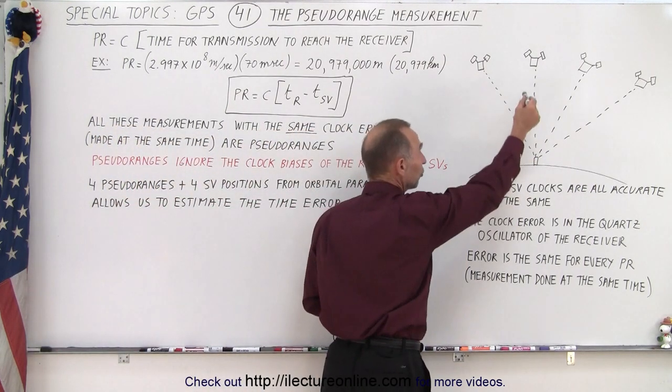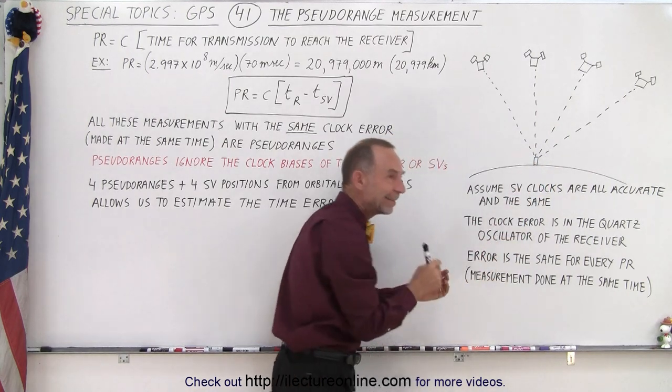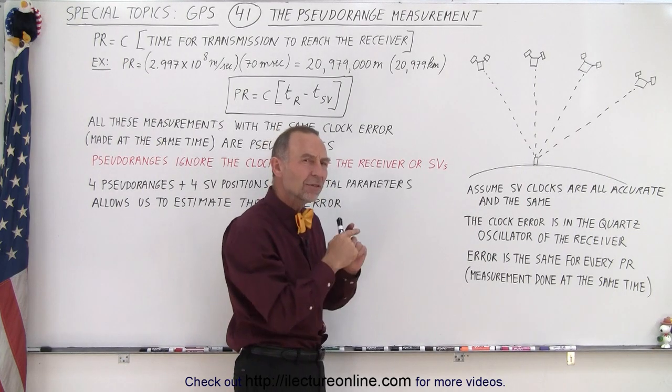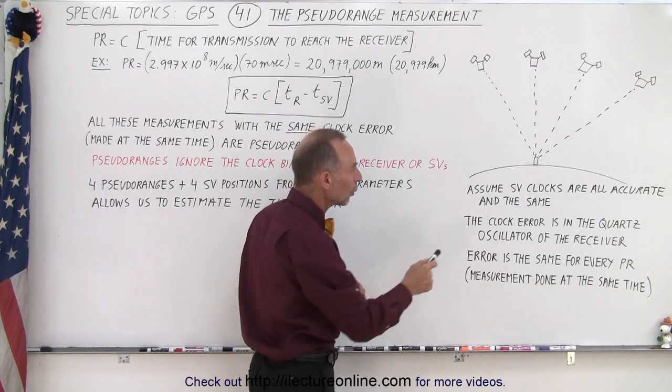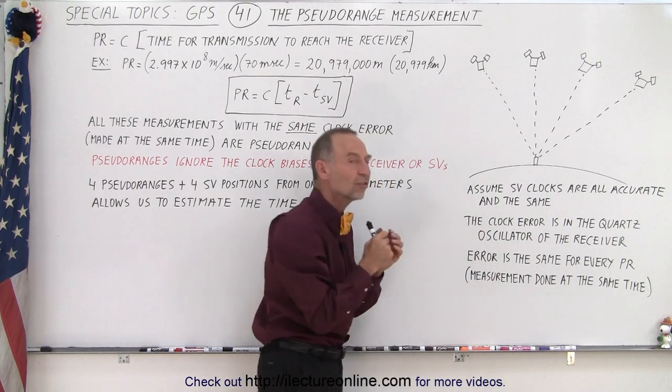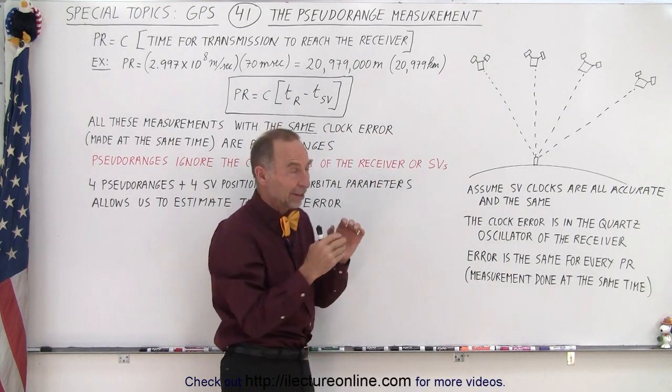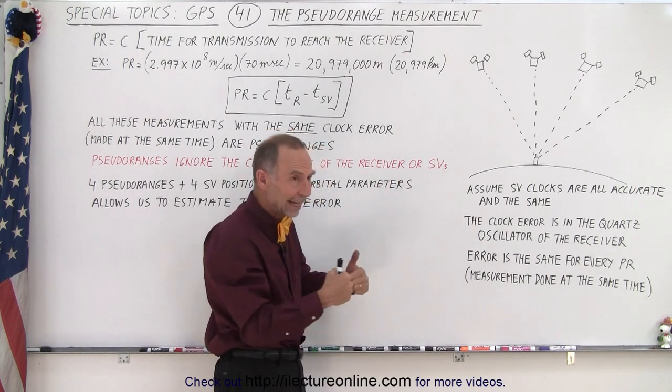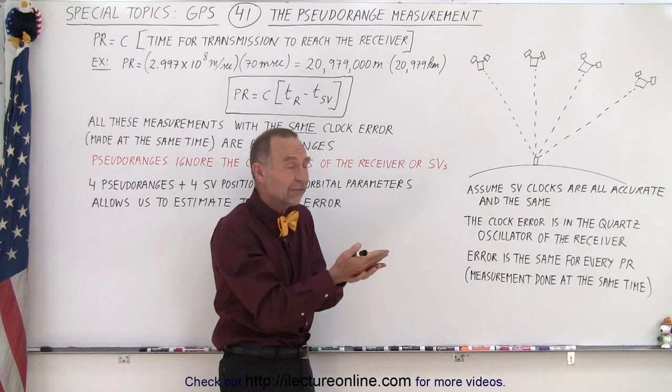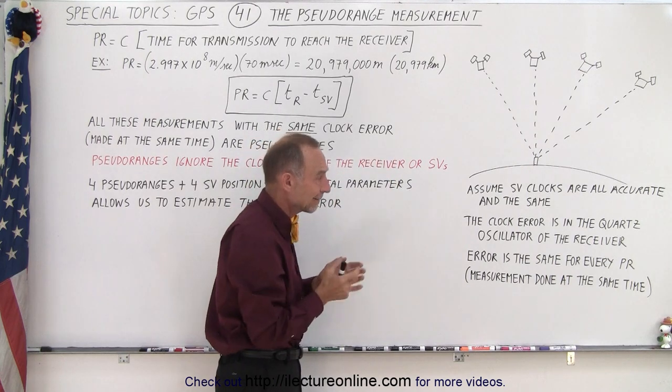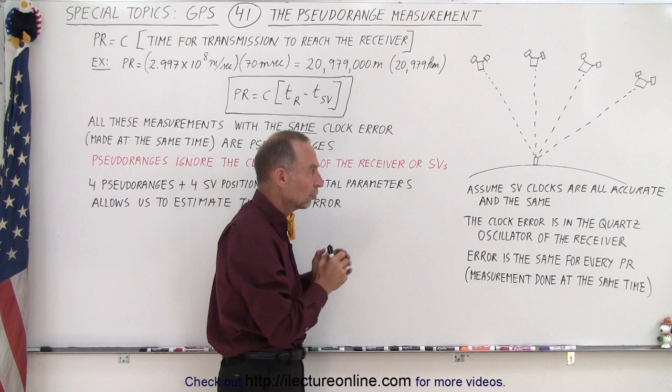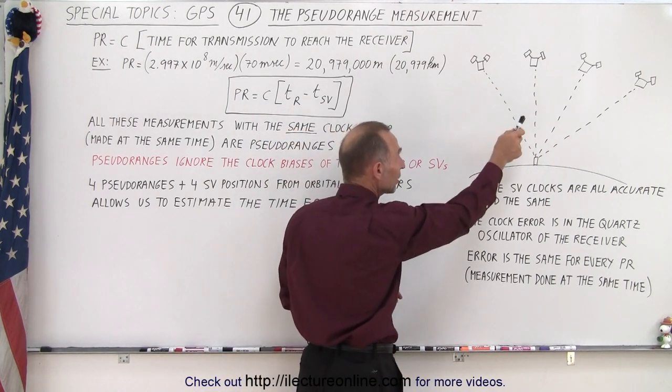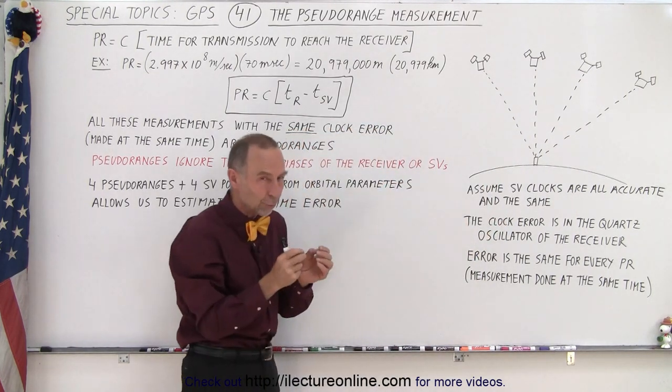Well, in each case, in each calculation for the pseudorange of the four satellites, the clock error of the receiver is the same in all cases because you're taking the measurement at the same time. What about the difference in the clocks of the satellites? Well, we're going to assume that the SV clocks are all accurate and the same. Now of course we know that's not perfectly correct. There are going to be some differences, but those clocks on the satellites are much more accurate than the clocks on the receiver and they reset on a periodic basis, or at least accounted for the difference between the clocks in the satellites and the clocks in the atomic clock system on Earth. So we will know those very accurately, but for the time being to take the pseudorange measurements we're going to assume that the SV clocks are all the same and all accurate and that's roughly correct.